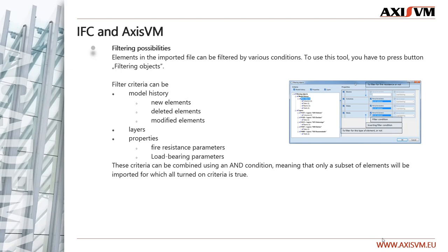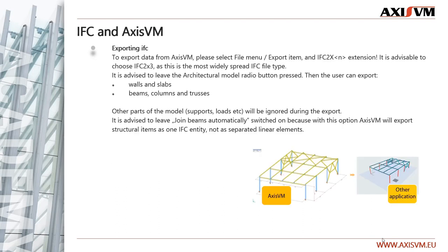We offer various ways to filter elements before import. To use this tool, press the button called 'Filtering objects.' Filter criteria can be model history, layers or properties. These criteria can be combined using an AND condition, meaning that only a subset of elements will be imported for which all turned-on criteria are true. To export data from AxisVM, please select the File menu, Export item, and any of the IFC 2X extensions. It is advisable to choose IFC 2X3 as this is the most widely spread IFC file type. It is advised to leave the architectural model radio button pressed, then the user can export walls, slabs, beams, columns and trusses. It is advised to leave 'join beams automatically' switched on because with this option AxisVM will export structural items as one IFC entity, not as separated linear elements.